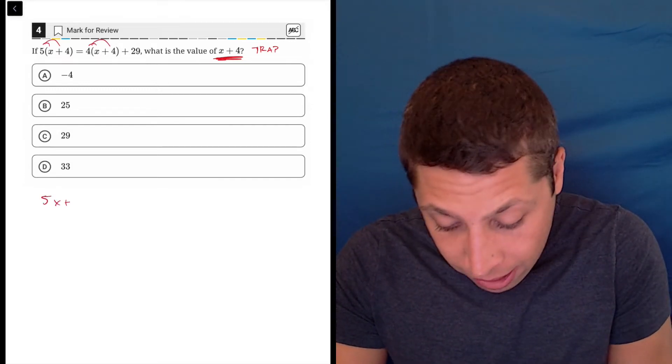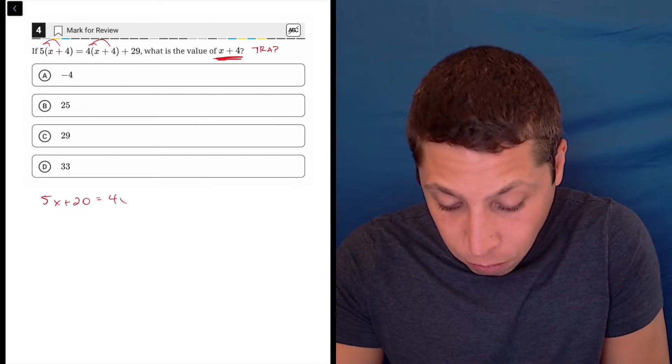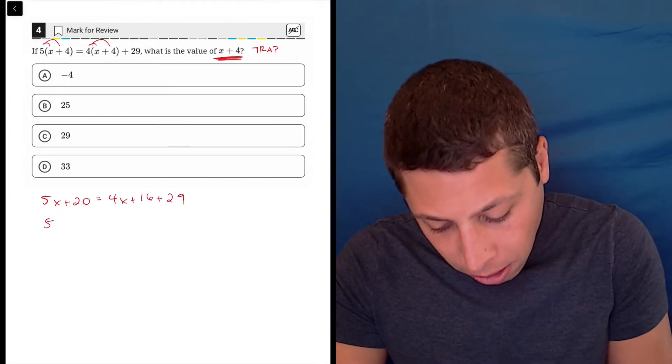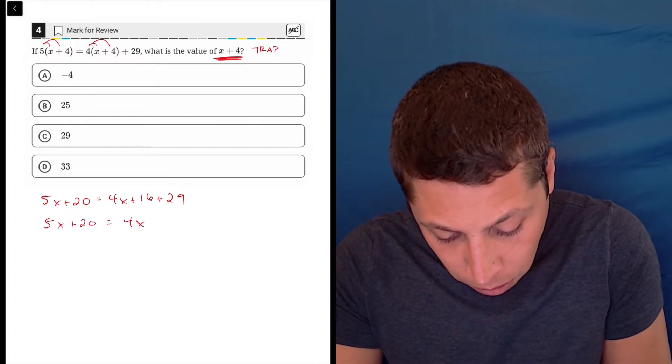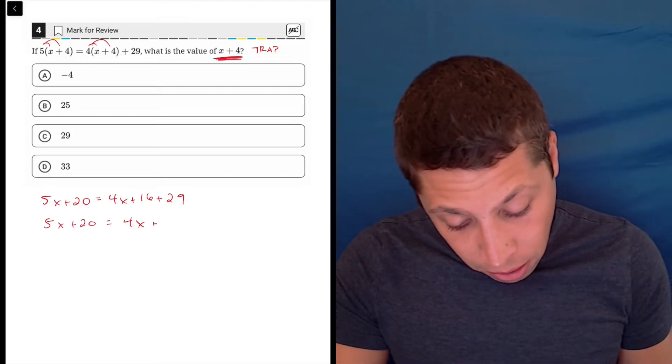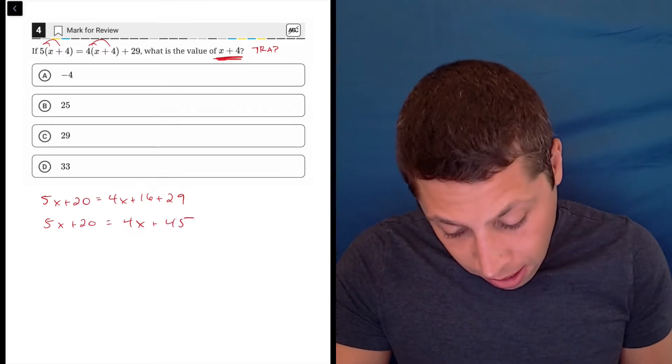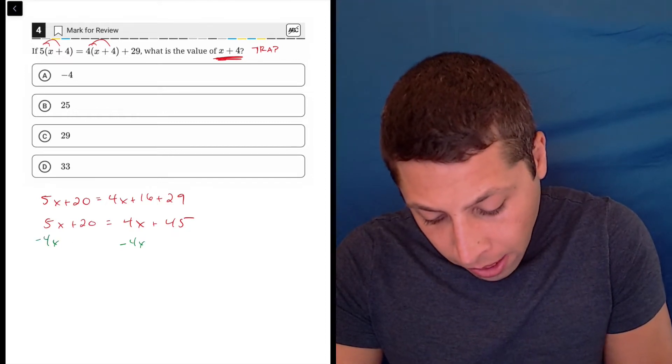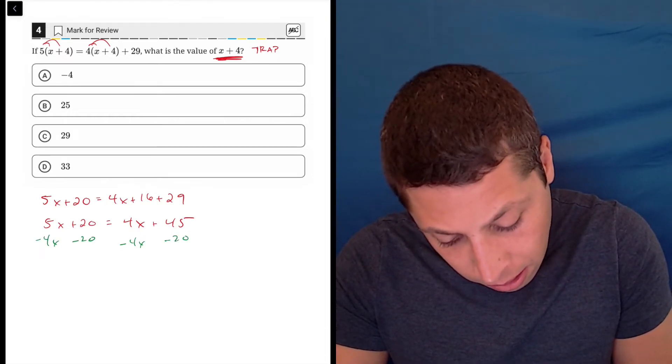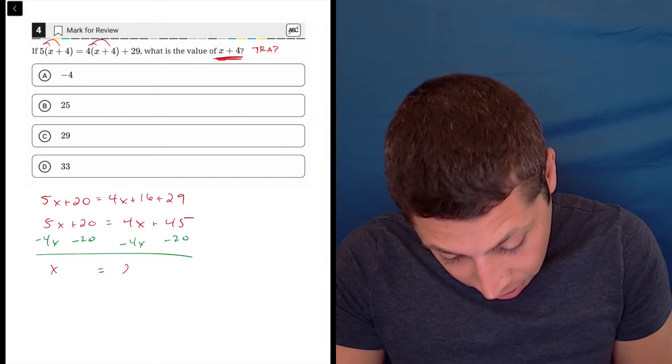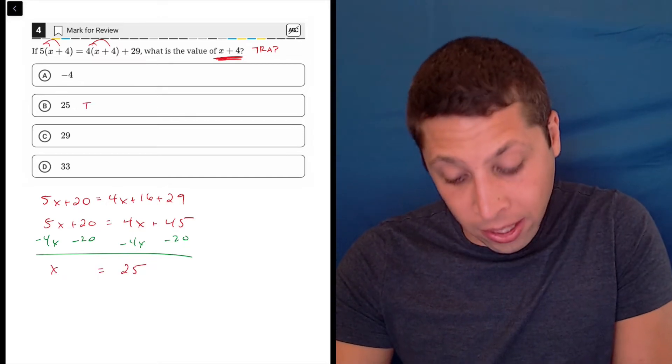So 5x plus 20 is 4x plus 16 plus 29. Start combining like terms. We're going to get 4x plus 20 plus 1 is 30, 45 there. Then subtract the 4x from both sides and the 20 from both sides, and we get that x is 25, which obviously is an answer.